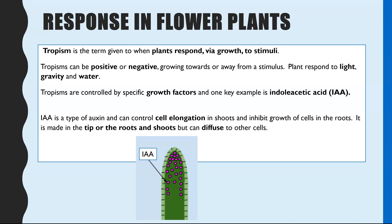First of all, just a bit of a recap from GCSE and looking at how this then progresses in A-level. Responses in plants are tropisms, and that's the term given when the plant does respond to a stimulus but the response is linked to its growth and cell elongation. Tropisms can be described as positive if the plant ends up growing towards the stimulus, or negative if it results in a part of the plant growing away from the stimulus. The three key stimuli are light, gravity, and water.